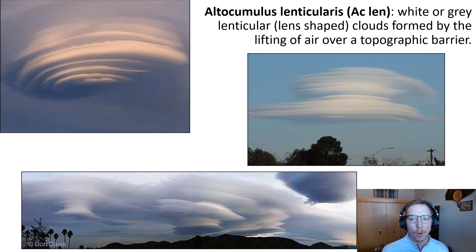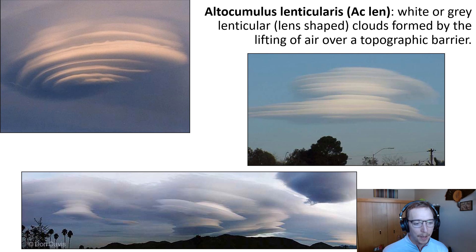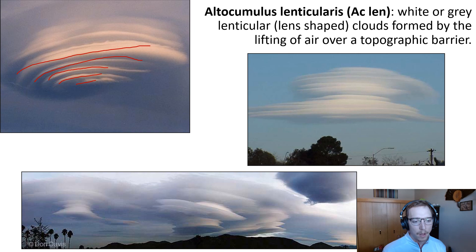The first subclass is altocumulus lenticularis — white or gray lenticular, or lens-shaped clouds formed by the lifting of air over a topographic barrier. You can kind of see they've almost got a stacked-plates appearance, with plates of different sizes stacked on top of one another.